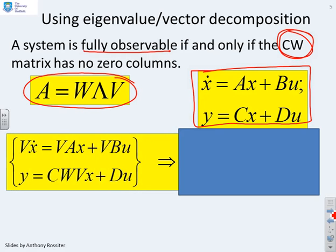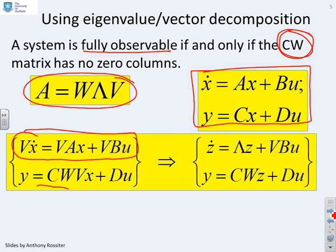And then you'll remember, we said, alright, let's use this decomposition to find the eigenmodes of the system. So I pre-multiply by v. That's what I've done there. And I've got vx dot equals vax plus vbu. And I'll worry about this output equation in a minute. And if we do that, you find you end up with z dot equals lambda z plus vbu, where z equals vx. So there's our system described in terms of its eigenmodes.